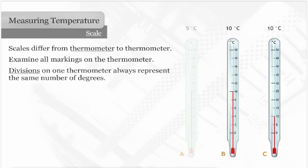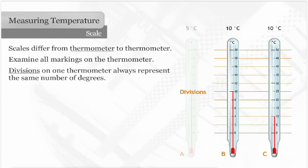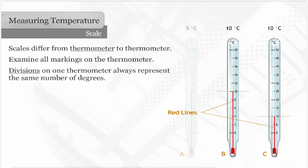Compare thermometers B and C. The temperature is the same, ten degrees, the zeros are in the same position, the divisions are the same size, but this time the heights of the red lines are different.